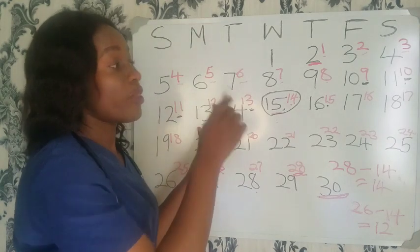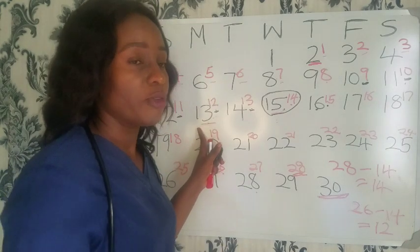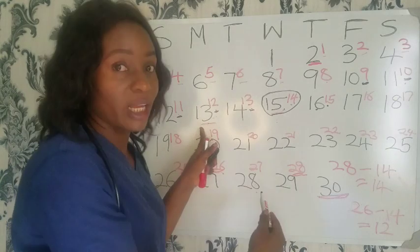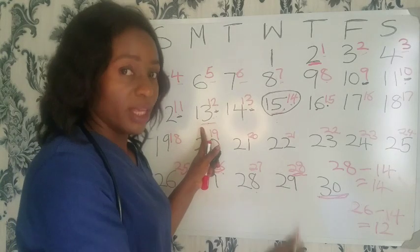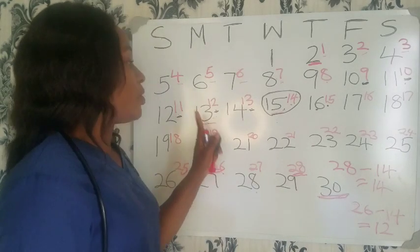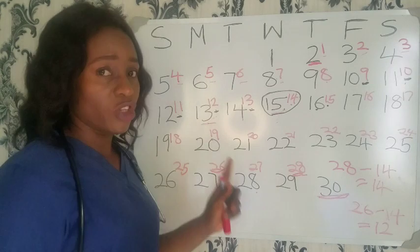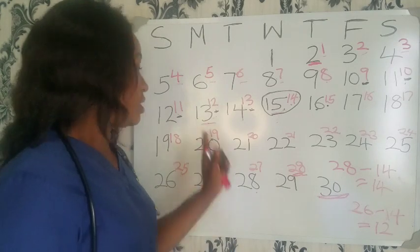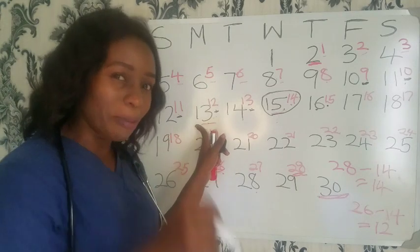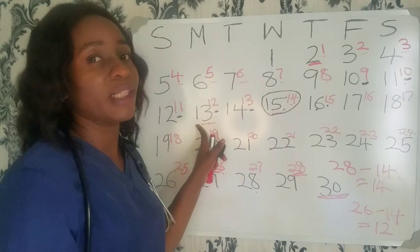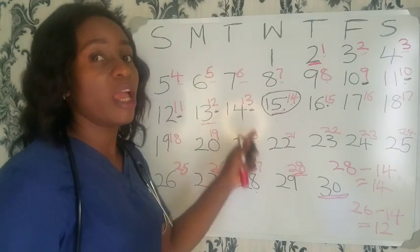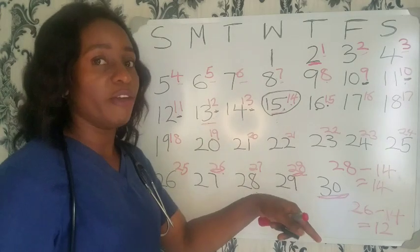Whatever menstrual cycle you have — 30 days or any other length — you can use this same calculation to find your ovulation day. However, it doesn't necessarily mean ovulation will take place exactly on that day; it can also take place a day before.